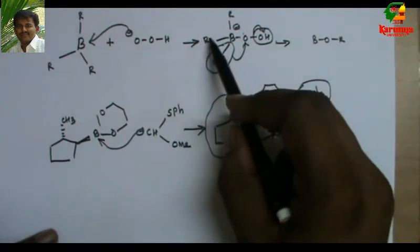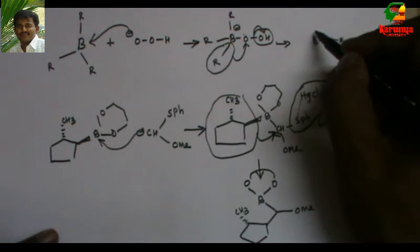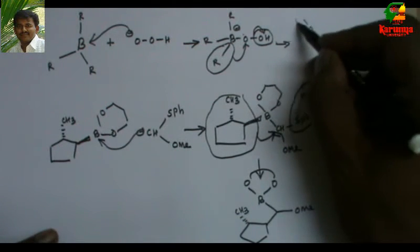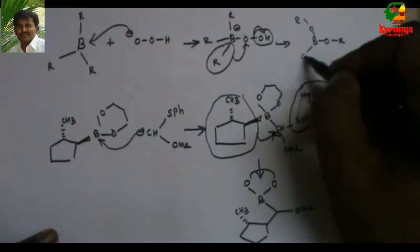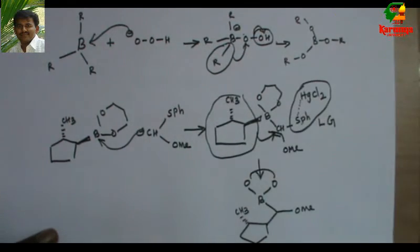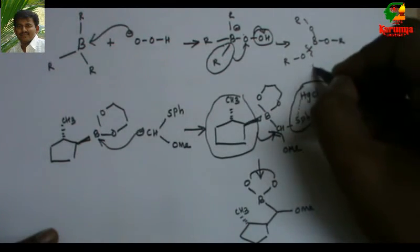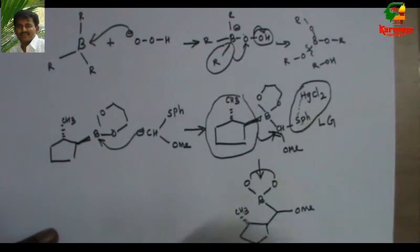So all the three R groups undergo a similar migration to give this compound, which undergoes hydrolysis to give OR or OH. So this is hydroboration oxidation.